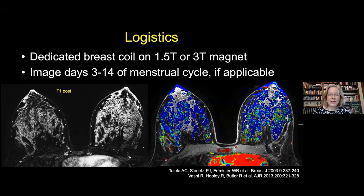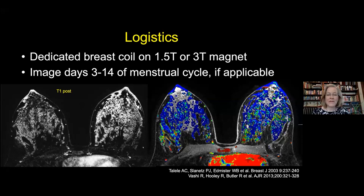Another important consideration, especially for premenopausal patients, is controlling for where they are in the menstrual cycle. Because we're giving intravenous gadolinium to evaluate the breast parenchyma, the uptake of gadolinium in normal breast tissue will vary across the menstrual cycle. Days 3 to 14—ideally day 5 or day 7 to 10—are the best times to schedule premenopausal patients for elective breast MRI, otherwise you may have significant background uptake making it difficult to see lesions.